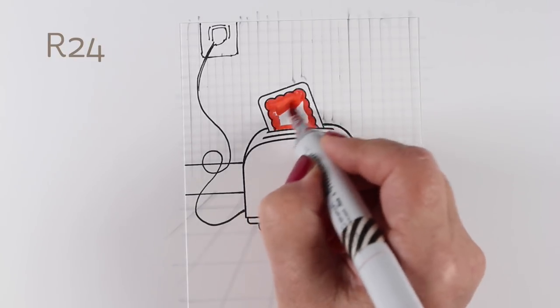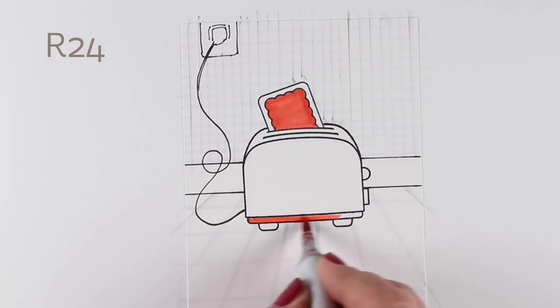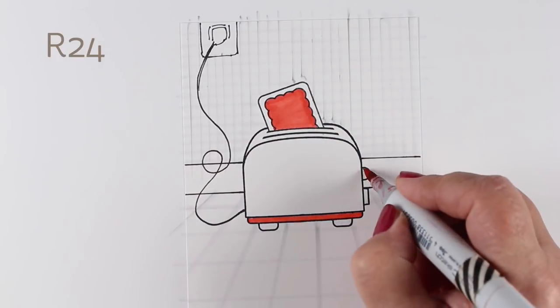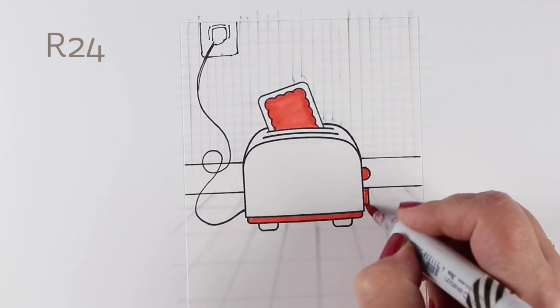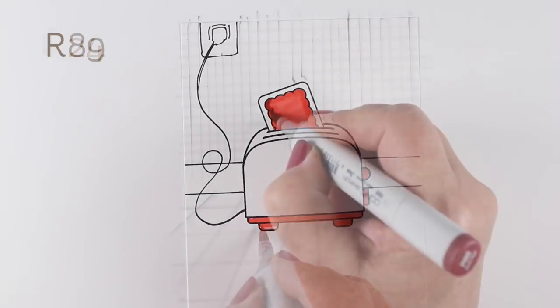But first I'm going to color my Pop-Tart and my toaster. And I decided I was going to make this a love card since it's a Valentine's stamp set, but you could use it year round.